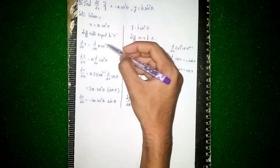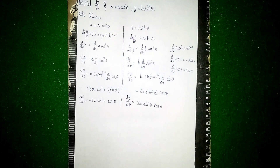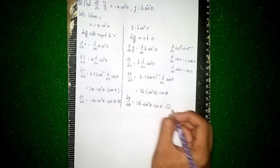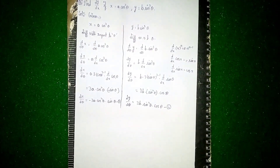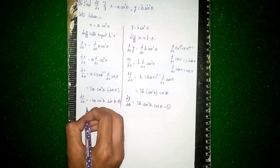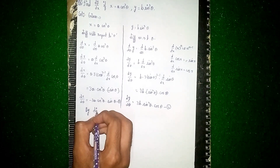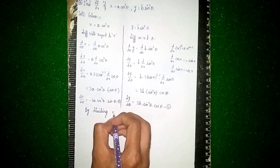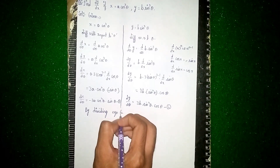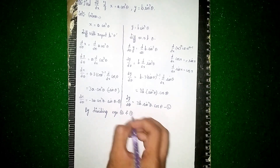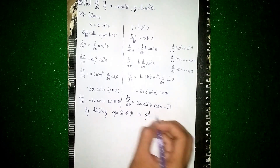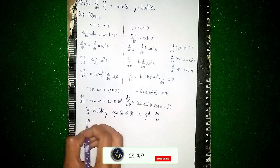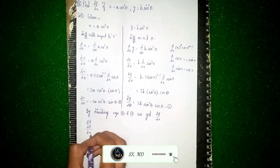Now we want to find dy/dx. By dividing equation two by equation one, we get dy/dx = (dy/dθ) / (dx/dθ). So dy/dx = 3b·sin²θ·cosθ divided by −3a·cos²θ·sinθ.